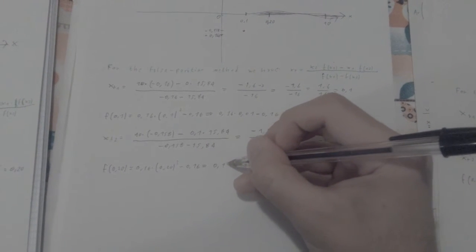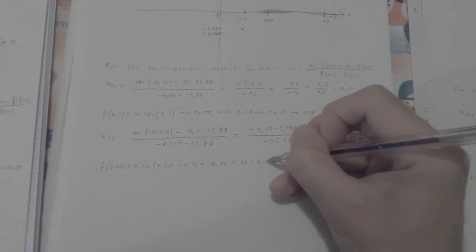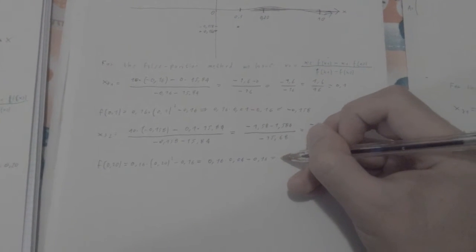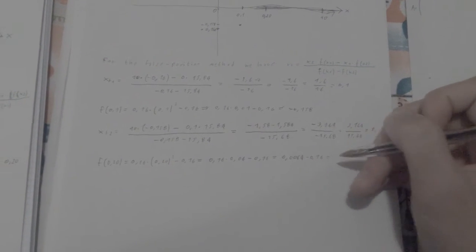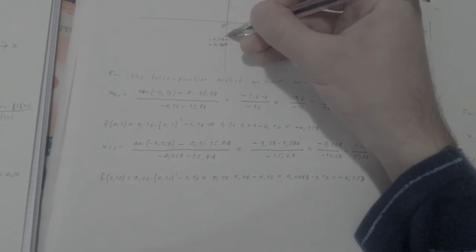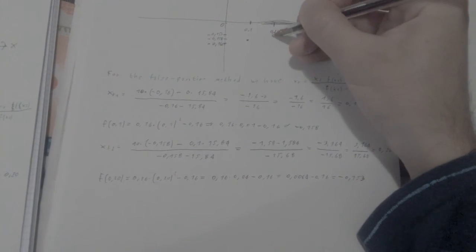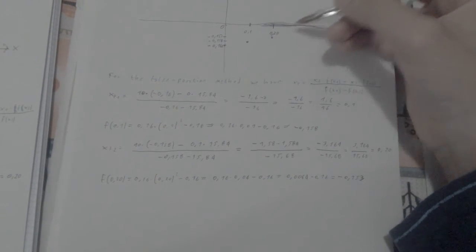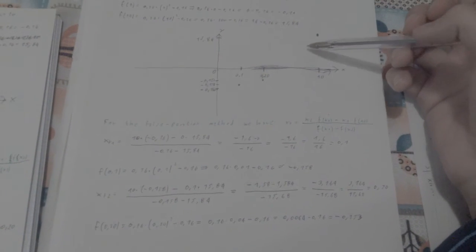Which is actually going to give me 0.16 times 0.04 minus 0.16, so 0.0064 minus 0.16, which gives me negative 0.153. There we go, negative 0.153. So we're getting there, we're getting closer.